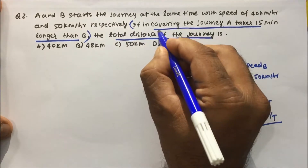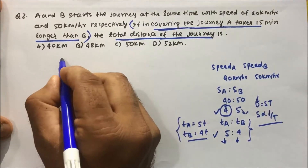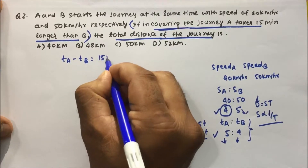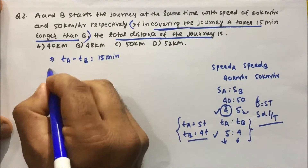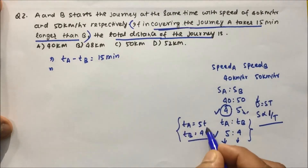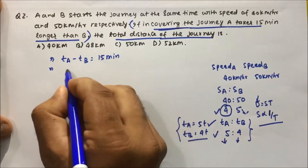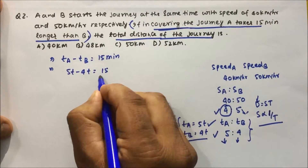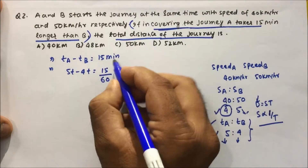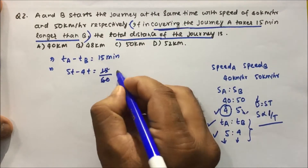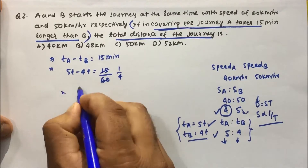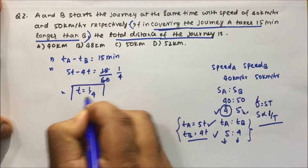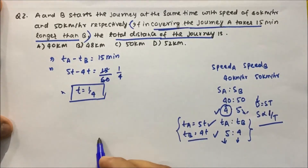A takes 15 minutes longer than B, so time of A minus time of B = 15 minutes. So 5t minus 4t = 15 minutes. Writing in hours: 15/60 = 1/4. So t = 1/4.